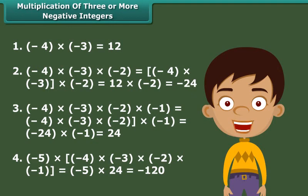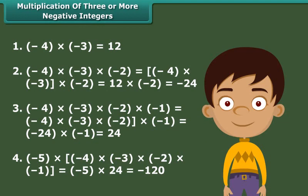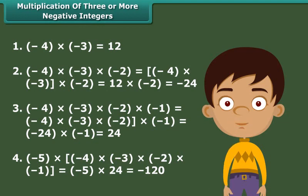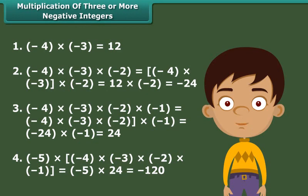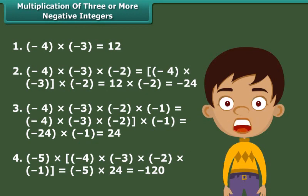Hence we can say that if the number of negative integers in a product is even, then the product is a positive integer. And if the number of negative integers in a product is odd, then the product is a negative integer.